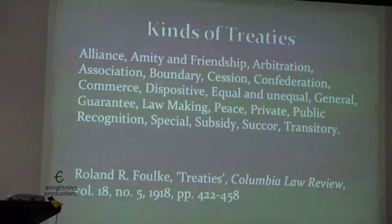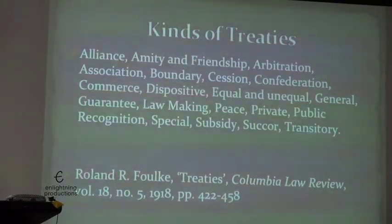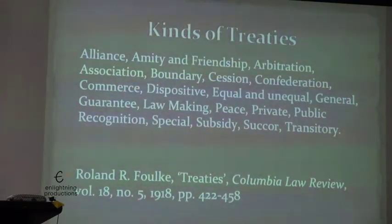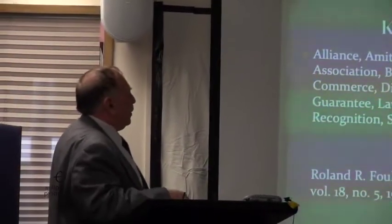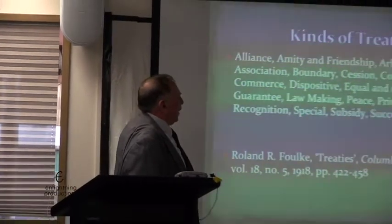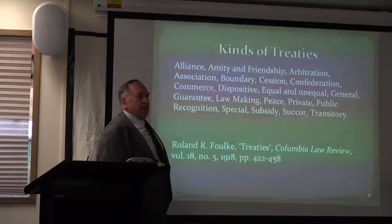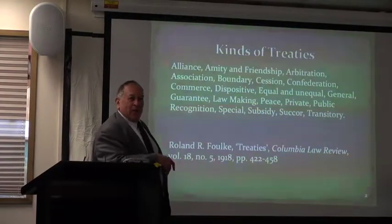These are some kinds of treaties: alliance, amity and friendship, arbitration, association, boundary, cession, confederation, commerce, dispositive, equal and unequal, general guarantee, lawmaking, peace, private, public recognition, special subsidy, sucker and transitory. It means nothing, right? So what we have to do when we look at that is see if we can pick out exactly what kind of treaty they might want to have with you.